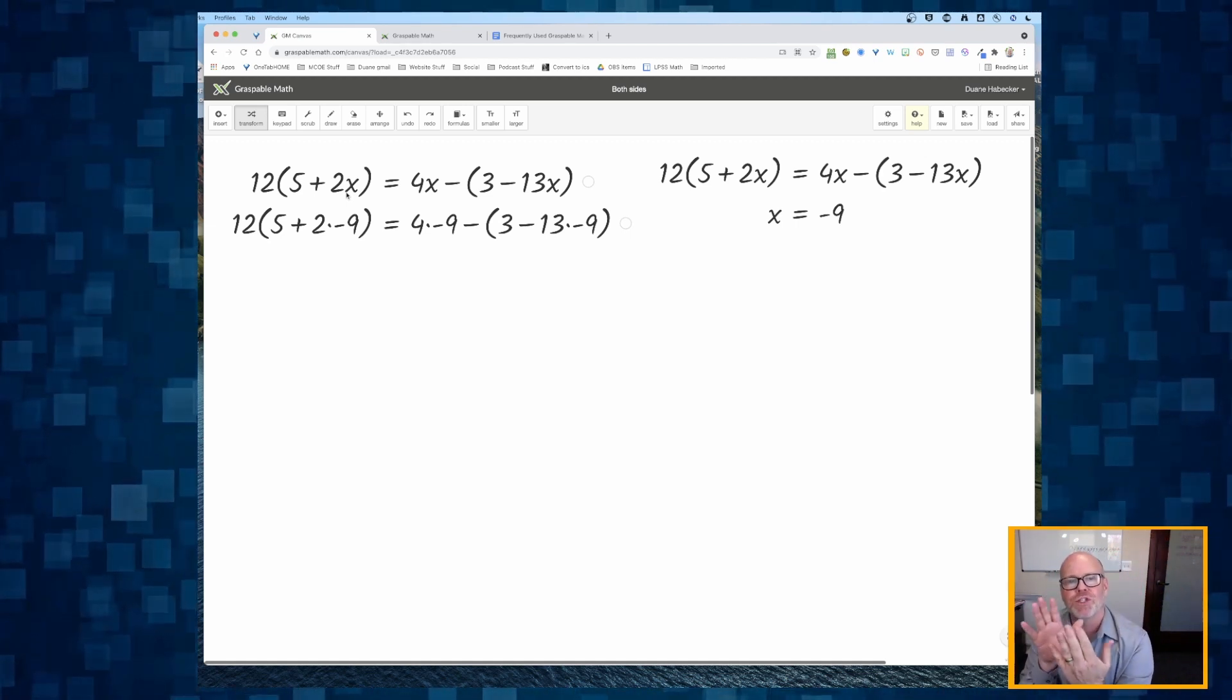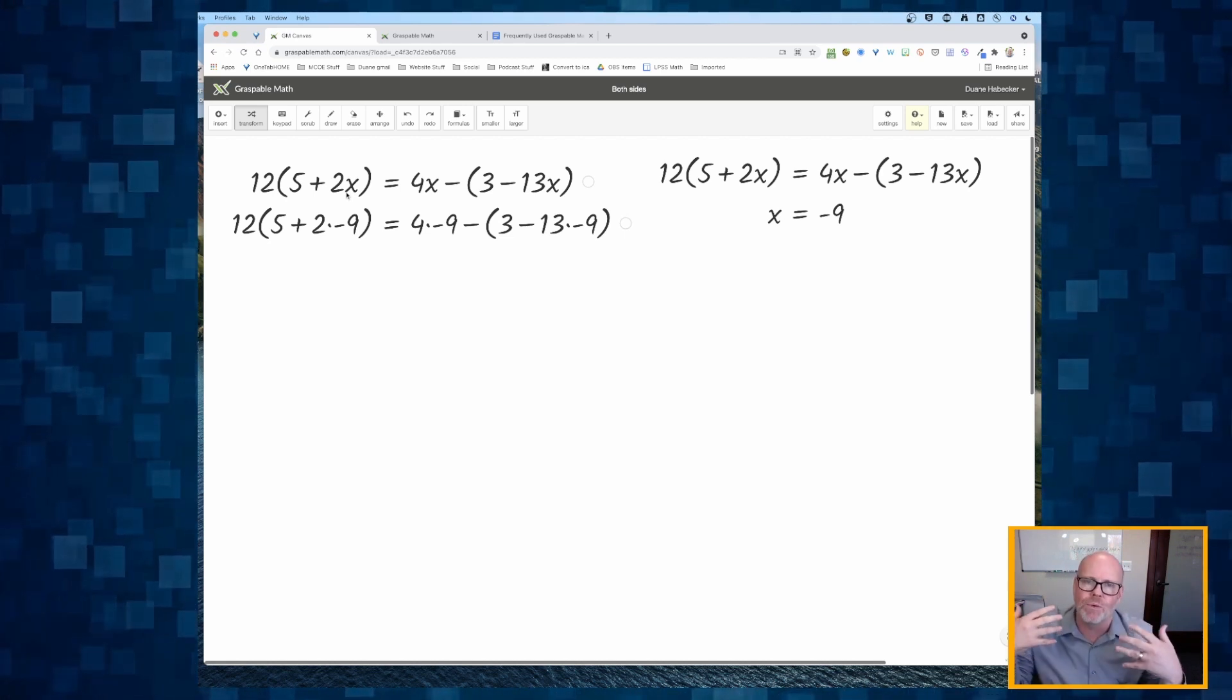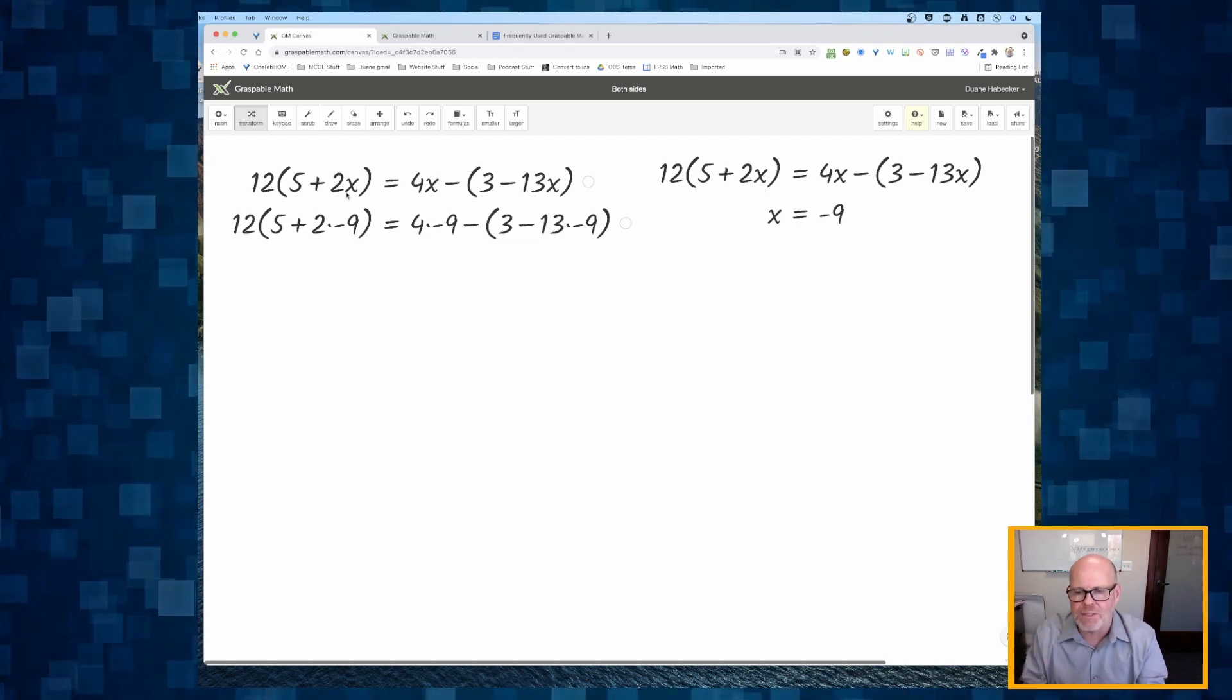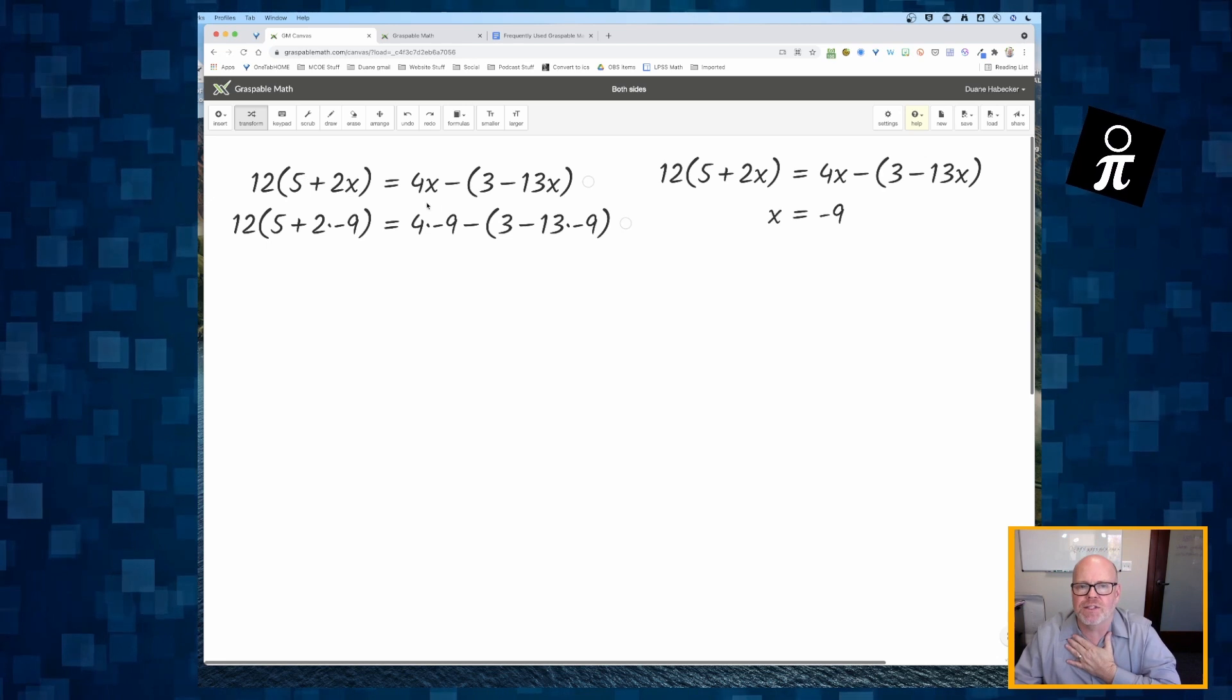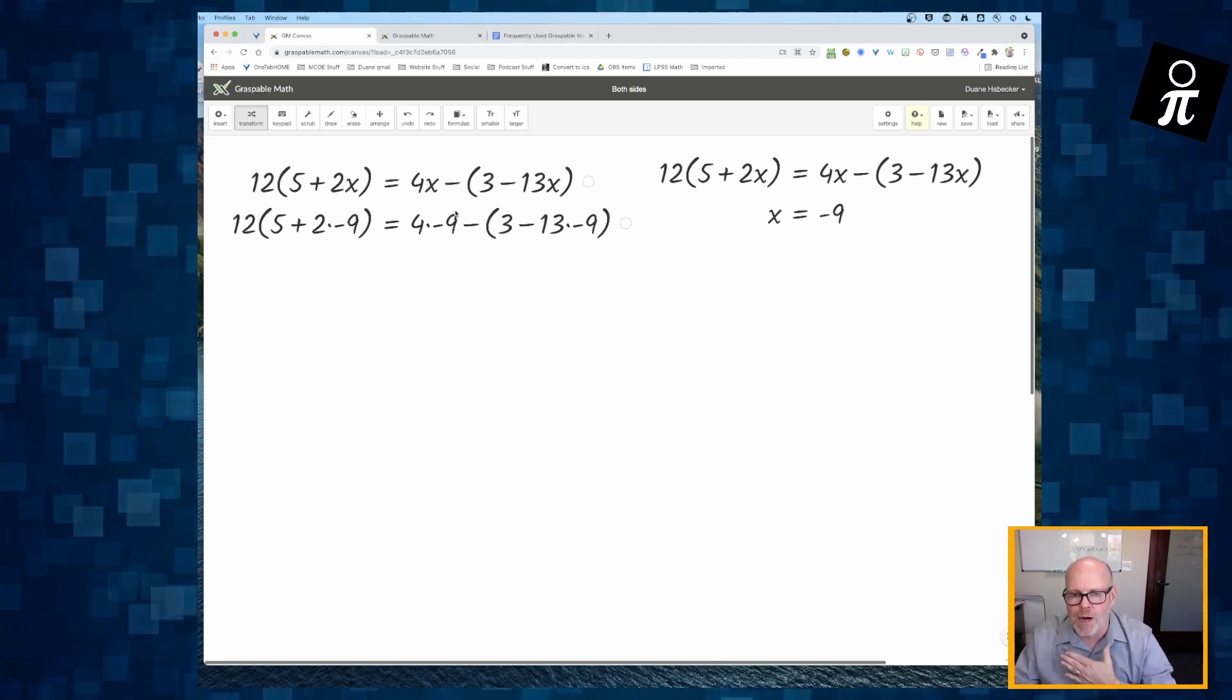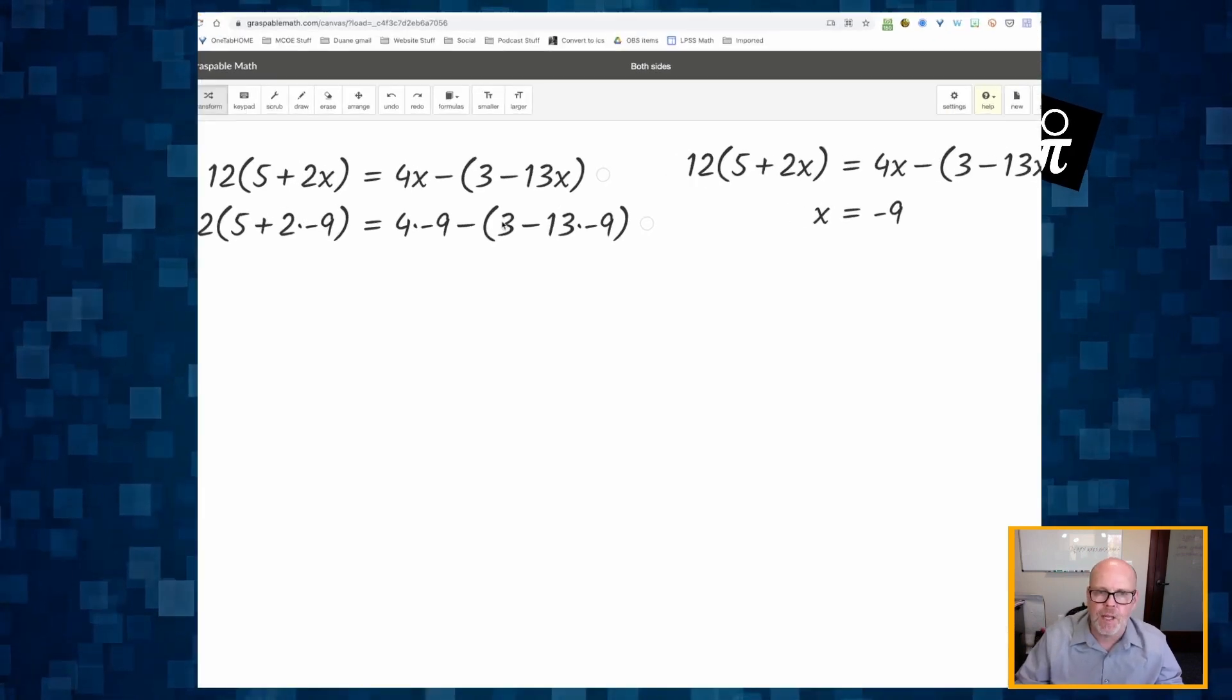And this is the power of Graspable Math. So now students don't have to dread trying to check their work, but making an arithmetic error. Because Graspable Math is going to take care of that. So all the student has to know is the order of operations. What am I supposed to do? For example,